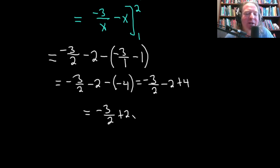Easy way to do that is think of 2 as a number over 2, so you can write this as negative 3 over 2 plus 4 over 2. When you add these, you're just going to get 1 over 2, which is the answer to the definite integral.